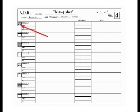Every cue is assigned a part number. The first number is the reel number, followed in numerical order: 01, 02, 03, and so forth. So the cues in this reel will be 401, 402, 403, etc.